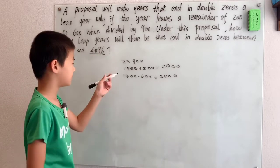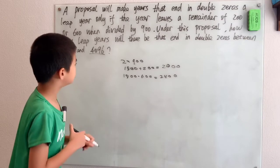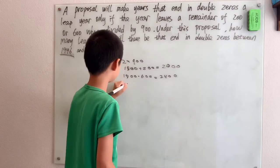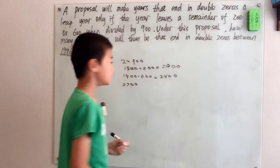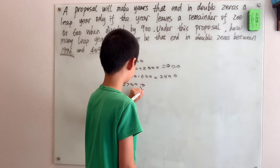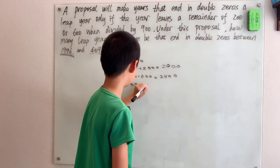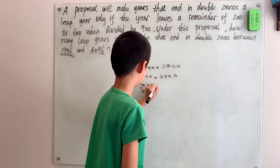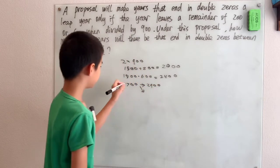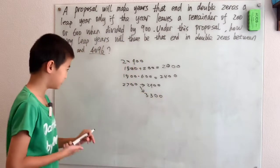The third multiple, 3 times 900, is 2700. Then we can add on 200 or 600, which will give us two answers. The first is 2700 plus 200, which is 2900, and 2700 added on to 600 is 3300.